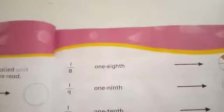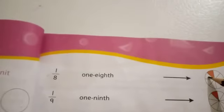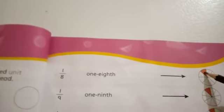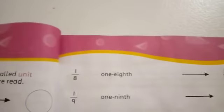If we divide a circle into seven equal parts, one part will be equal to one by seven, or one seventh of the whole circle. If we divide a circle into eight equal parts, one part will be equal to one by eight, or one eighth of the whole circle.